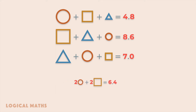After dividing both sides of the new equality by 2, we get the final equation: small circle plus medium square equals 3.2.